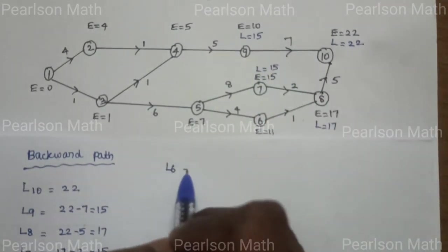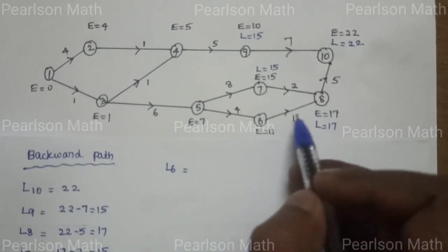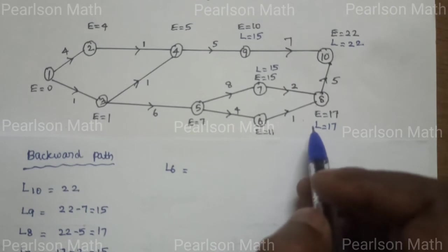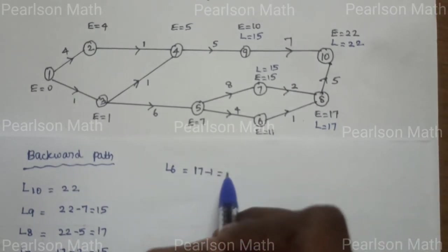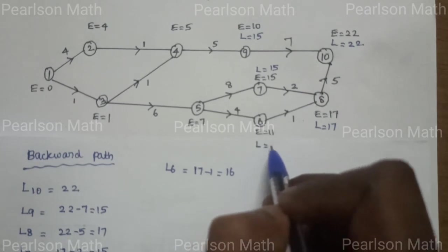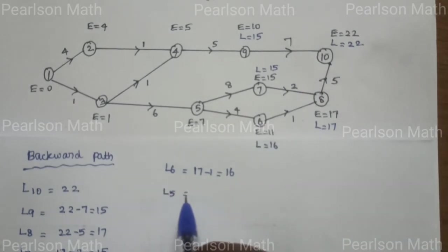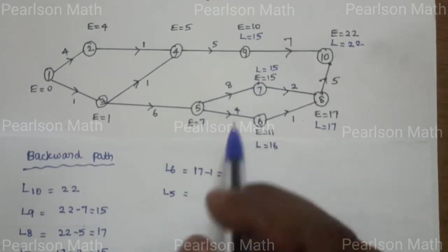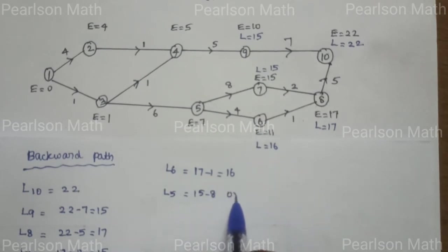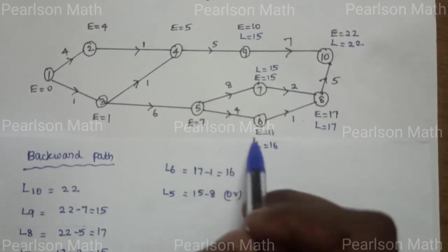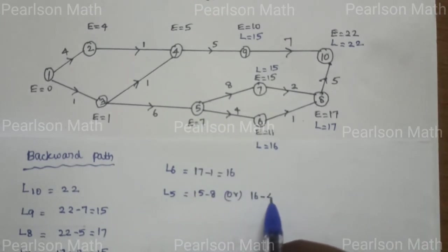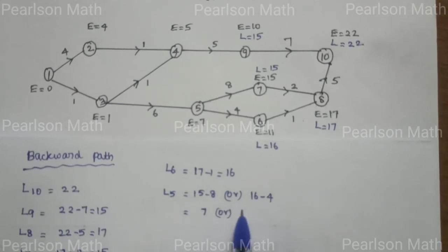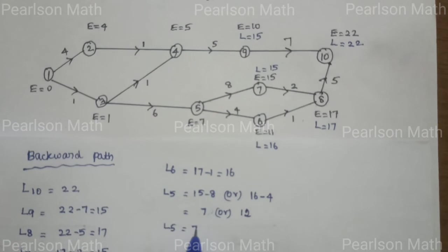L6: path 8 to 6 gives 17 minus 1 equal to 16. L5: two conditions — first condition 15 minus 8 equals 7, second condition 16 minus 4 equals 12. The minimum number is 7, so L5 is equal to 7. L4: path 4 to 9 gives 15 minus 5 equal to 10, so L4 is equal to 10.